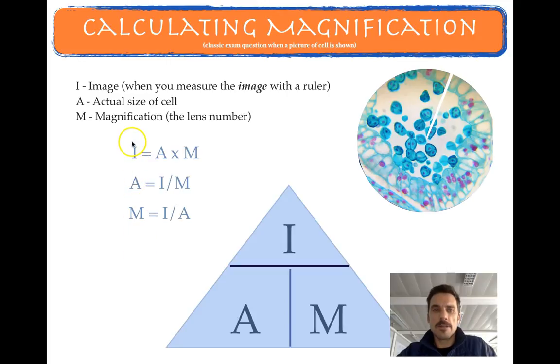IM is a nice way to remember this formula. I is image size. That's what's actually used if you have a picture on the paper. That's what you would use a ruler to measure that image size.